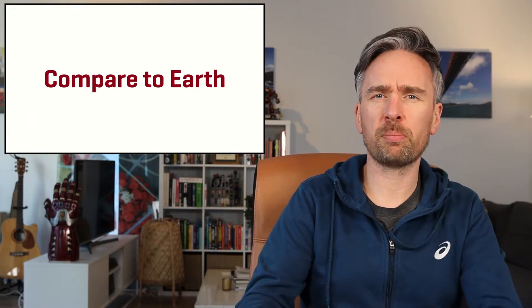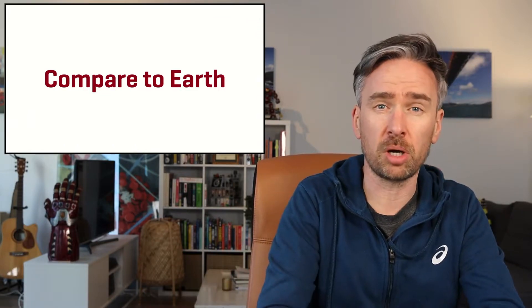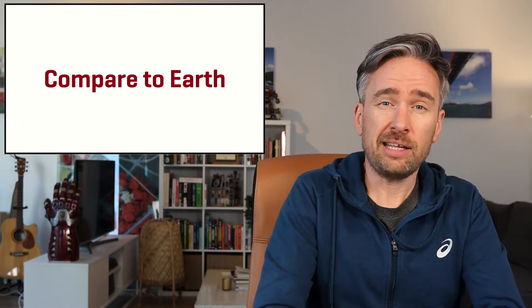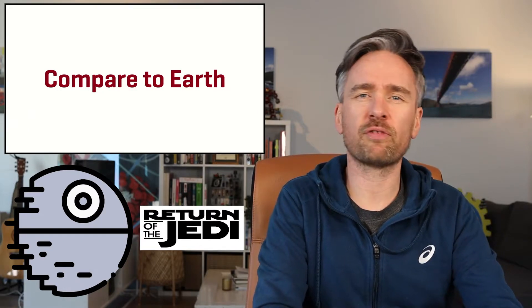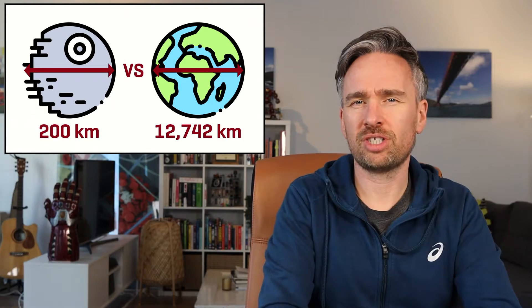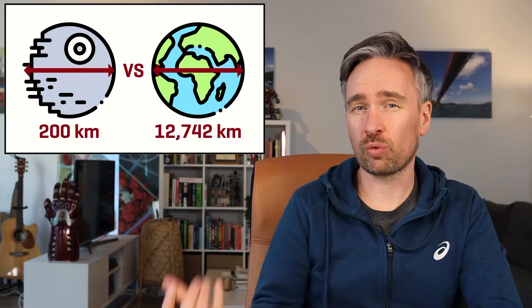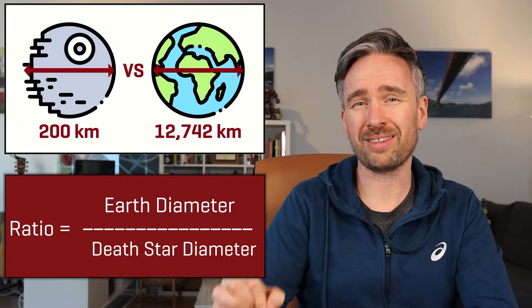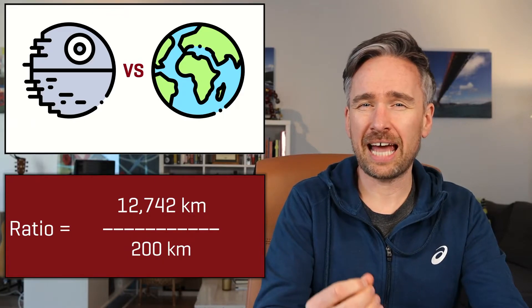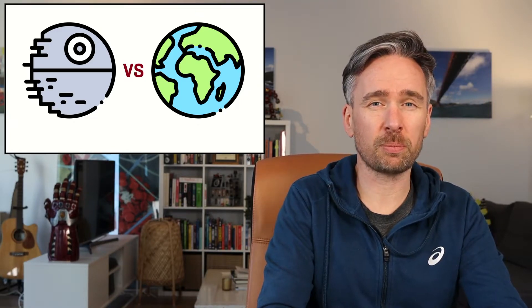Now, comparing the Death Star to objects in the solar system — for these comparisons I'm going to use the Death Star from Return of the Jedi, because it's the biggest at a diameter of 200 kilometers. The Death Star has a diameter of 200 kilometers, while the Earth has a diameter of 12,742 kilometers. To show this visually, we calculate a ratio by dividing Earth's diameter by the Death Star's diameter, then scale the image accordingly.